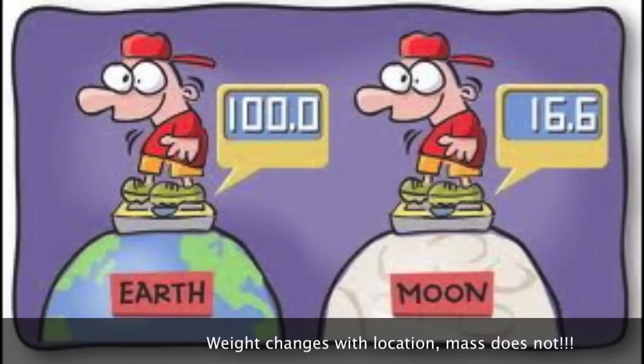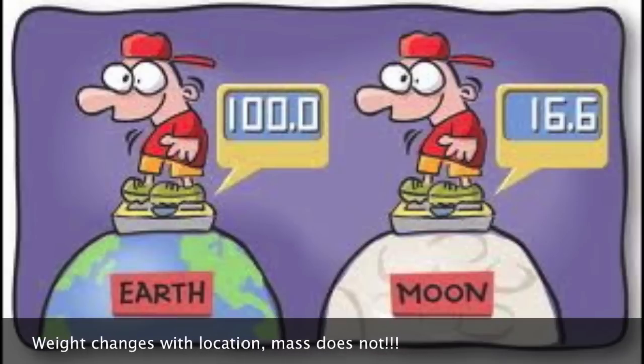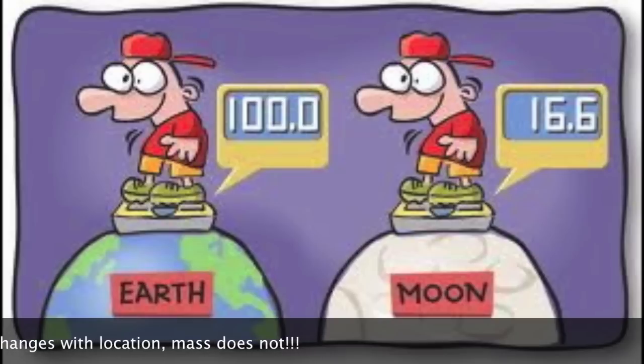But weight is a gravitational force, and it changes with your location. So you may weigh a hundred pounds on earth but only sixteen point six pounds on the moon. Weight is a force and a vector, so therefore, because it's a vector, it has size and direction.